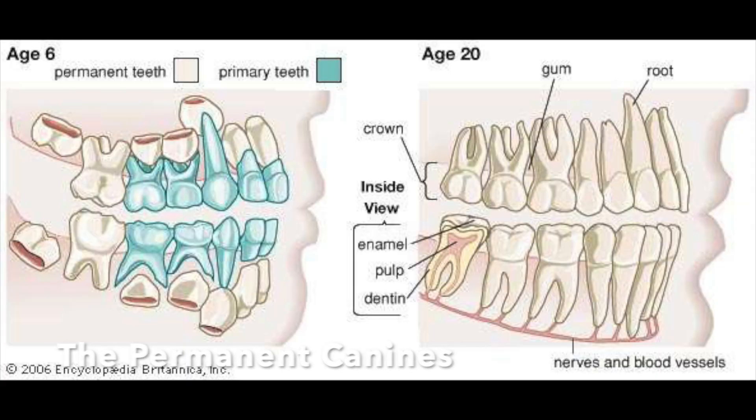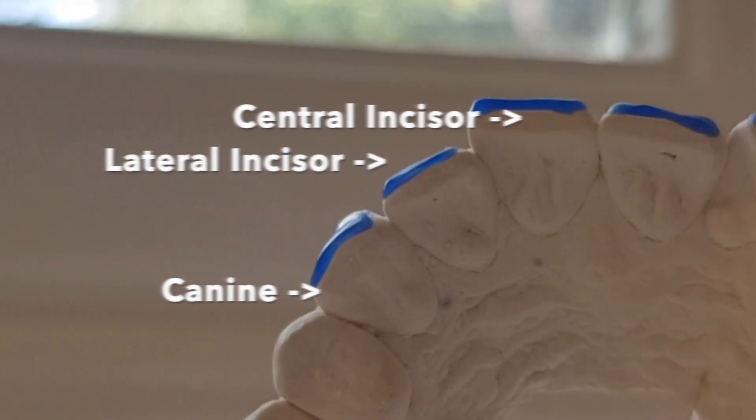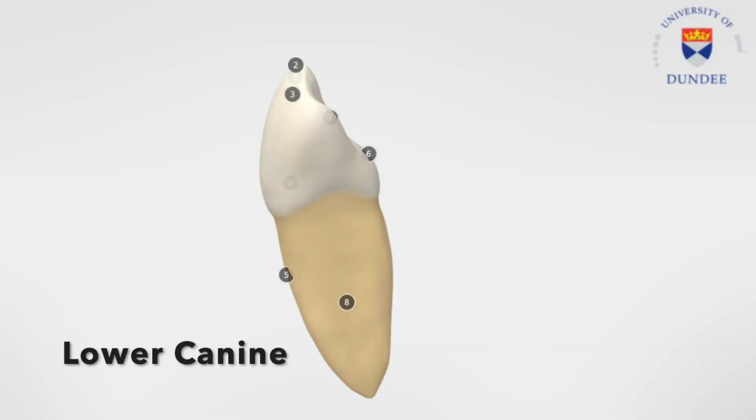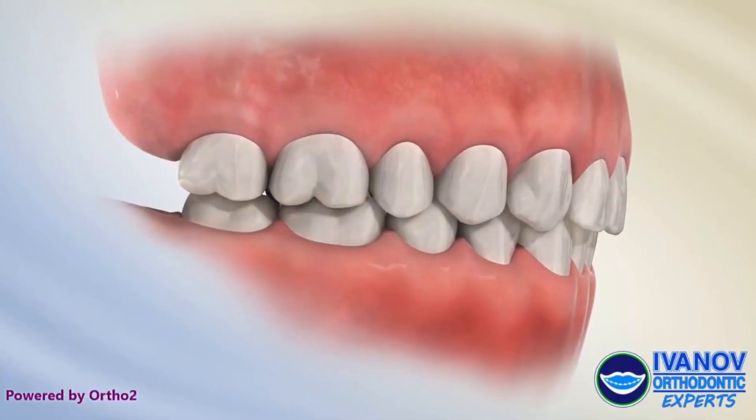So now we can move on to canines. Canines are the longest teeth in the mouth and they have a single cusp tip — that's one thing you can look for. The lower canines are much more curved, you can really distinctly see this, whereas the upper canines are not as curved. The reason for that is because when the lower model occludes with the upper model, the upper canine has to sit on top of the lower canine and push it back — that explains why the lower is so curved.